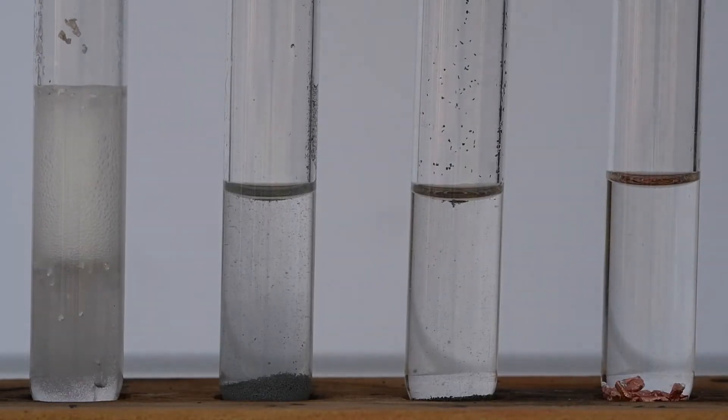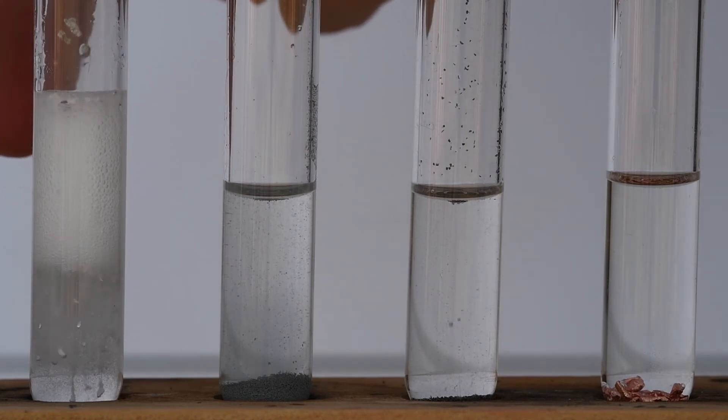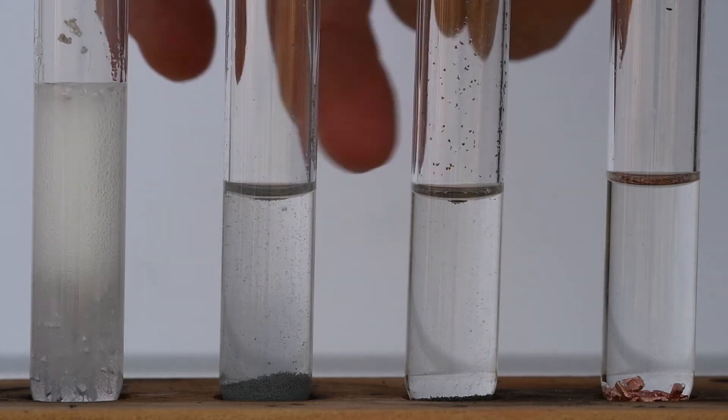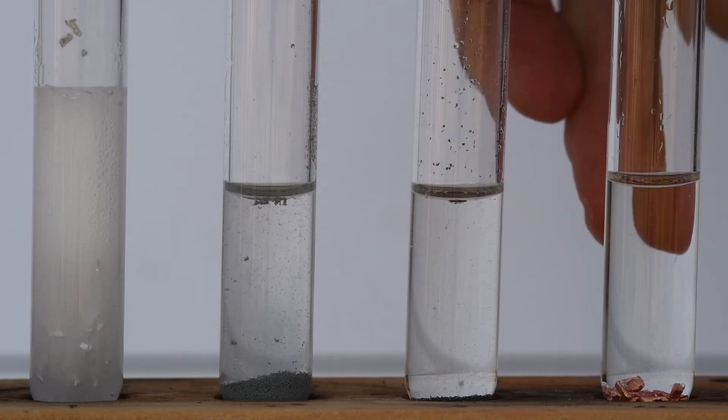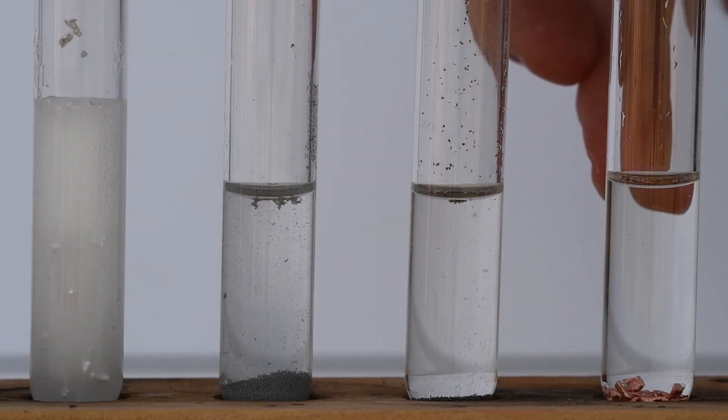You can immediately see there is a difference in reactivity, so the magnesium is definitely reacting fastest. The zinc and the iron at the moment look to be behaving in a fairly similar way, and as expected there's no visible reaction with the copper.